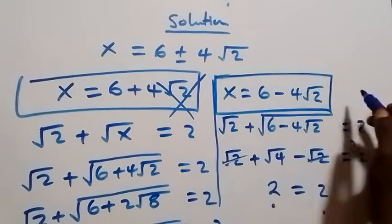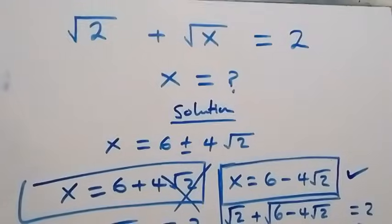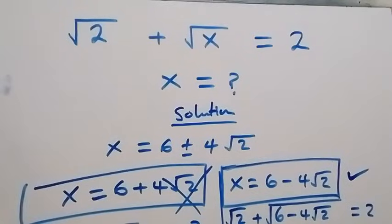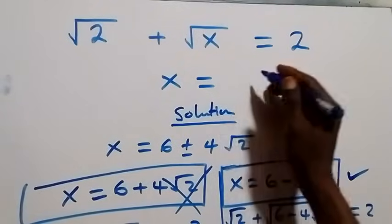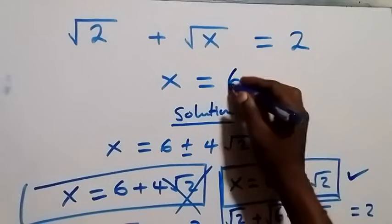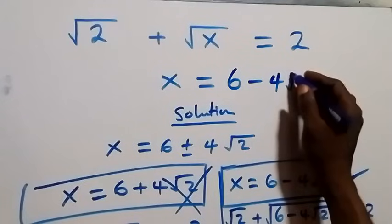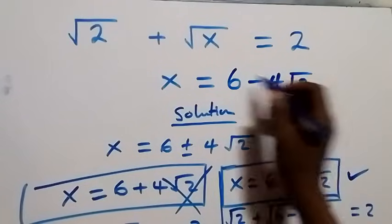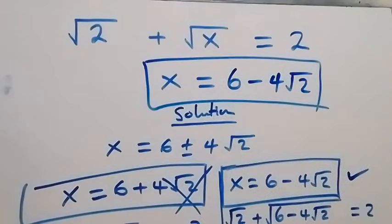Since left hand side equals right hand side, we conclude that x equals 6 minus 4 root 2 satisfies the given problem. Thank you for watching, don't forget to subscribe for more exciting videos and leave your comments in the comment section.